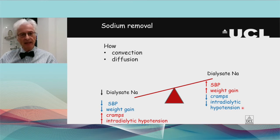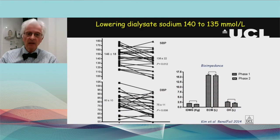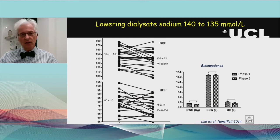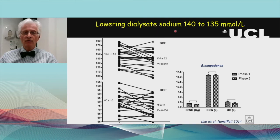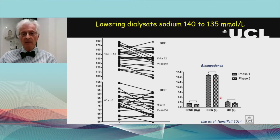With advances in dialysis machine technology, we now rely predominantly on convection — i.e., ultrafiltration — for sodium removal, and much less on diffusive loss. Looking at studies changing sodium concentrations in dialysate: a Korean study changing from 140 to 135 showed systolic blood pressure fell for the majority of patients, extracellular water was lowered, the degree of overhydration by bioimpedance was reduced, and weight gains between sessions were reduced.